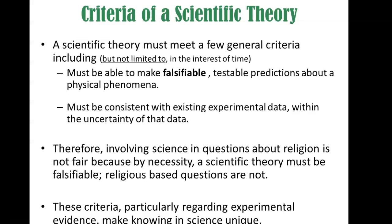If you predict that a falling object is going to take a certain number of seconds to hit the ground, that is a falsifiable claim — when you actually do the experiment, either it matches or it doesn't. It's something that could be proven or could be shown to be false. The second criteria a scientific theory has to meet is that it has to be consistent with existing experimental data.